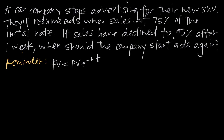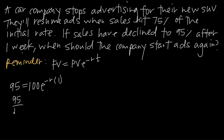We call the present value of sales 100, because we're at 100% at present. In the future, which is after one week, sales have gone down to 95%, so we'll say 95. We leave in the e, the exponential function, we leave the negative r, and t is going to be one week so we plug in 1 for t. Because we've plugged in for everything but r, this allows us to find a value for r. Dividing both sides by 100 gives us 95 over 100 equals e to the negative r.